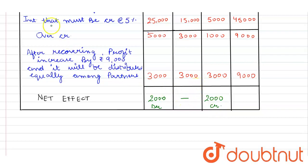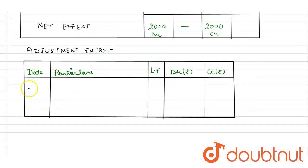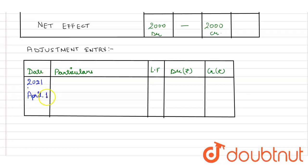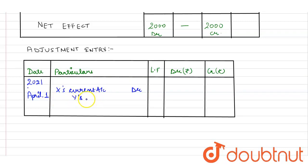Let's enter the journal. Date: 1st April 2021. X current account — debit; and Y current account — debit.